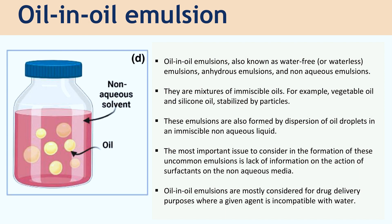The other type of emulsion is oil-in-oil emulsion, also known as water-free emulsions, anhydrous emulsions, and non-aqueous emulsions. They are mixtures of immiscible oils, for example vegetable oil and silicone oil stabilized by particles. These emulsions are also formed by dispersion of oil droplets in an immiscible non-aqueous liquid. The most important issue to consider in the formation of these uncommon emulsions is the lack of information on the action of surfactants on non-aqueous media.